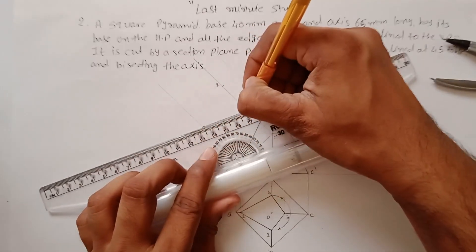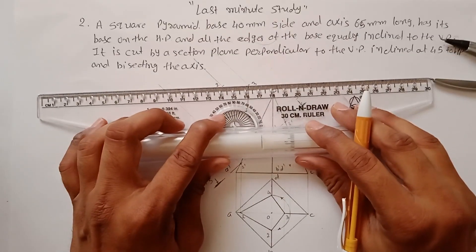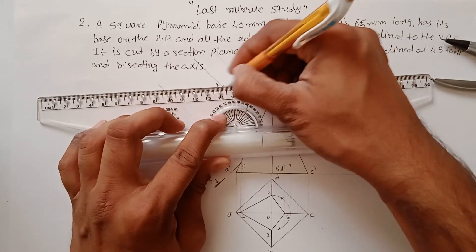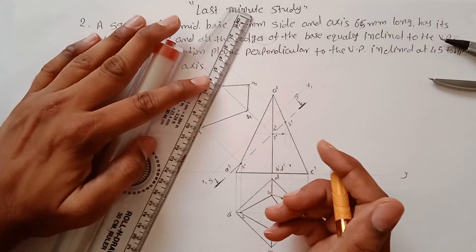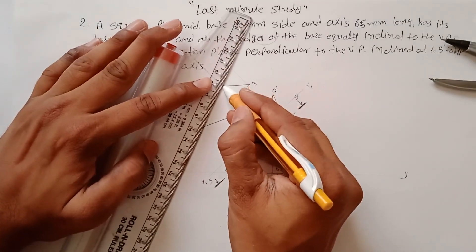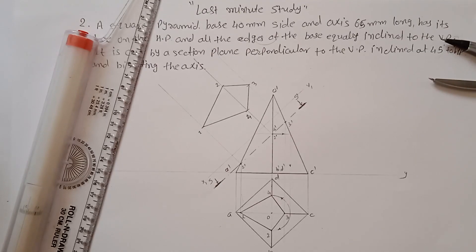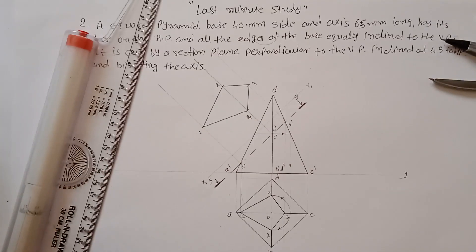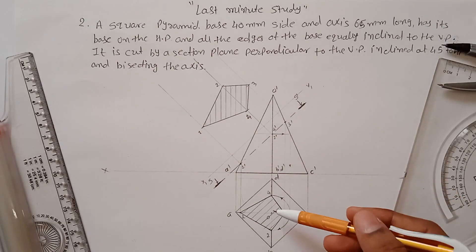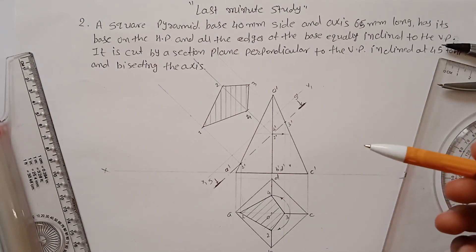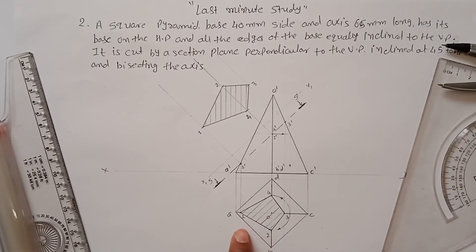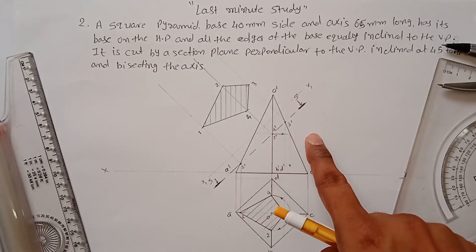Complete the true shape by joining all four points. Add section hatching lines inside the true shape — draw the section lines here and here. This completes the true shape. This is the sectional top view, and the triangle in the front view is simply called the front view, not the sectional front view.